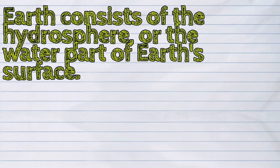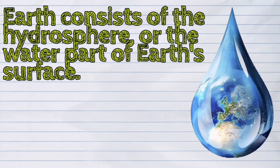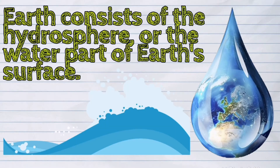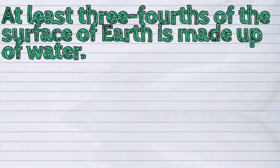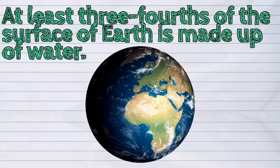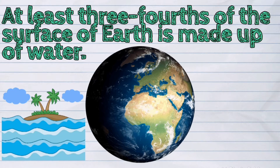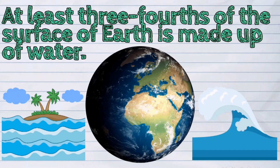Earth consists of the hydrosphere, or the water part of the Earth's surface. At least three-fourths of the surface of Earth is made up of water. There are several water forms found on Earth.